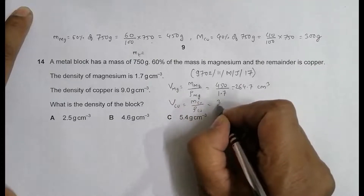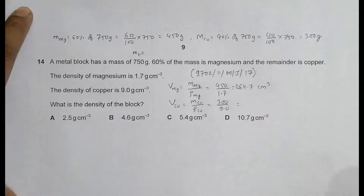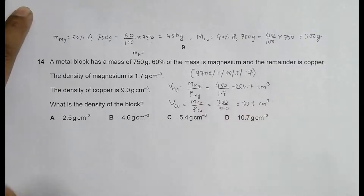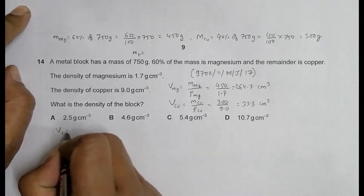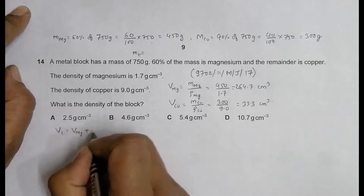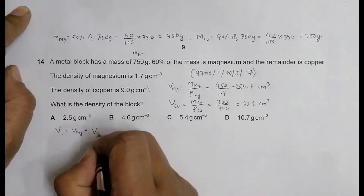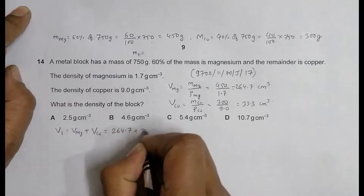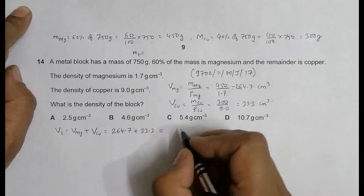Similarly, the volume of copper is equal to mass of copper divided by rho of copper, that's equal to 300 divided by 9.0, which equals 33.3 cm³. Now the total volume is equal to volume of magnesium plus volume of copper.